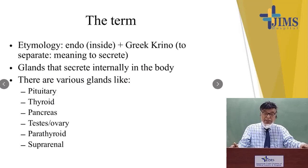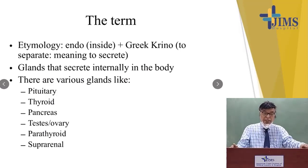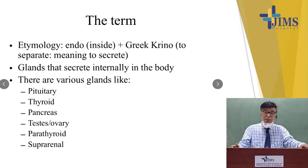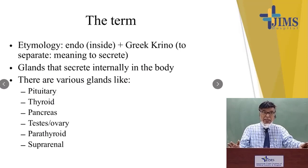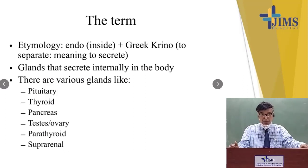Glands that secrete internally — the endocrine glands of the body — are various: pituitary, thyroid, pancreas, testes and ovary, parathyroid, and suprarenal. Some glands, though they work as endocrine organs, also produce exocrine secretions, like the pancreas, which has both endocrine and exocrine function.